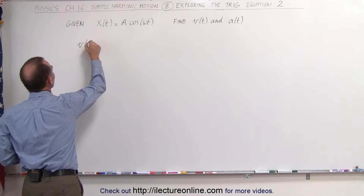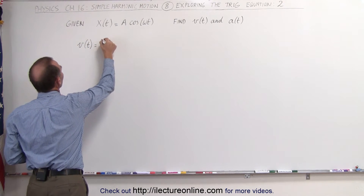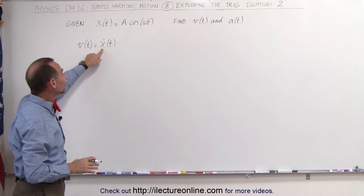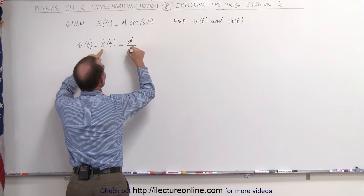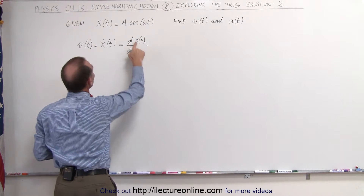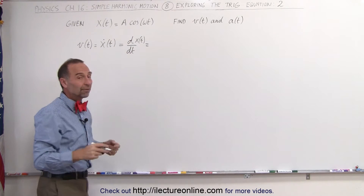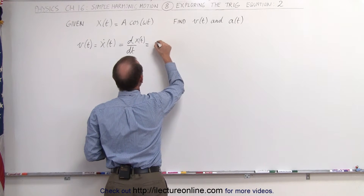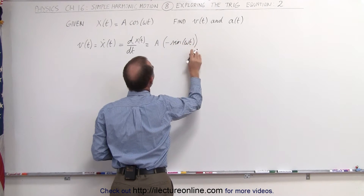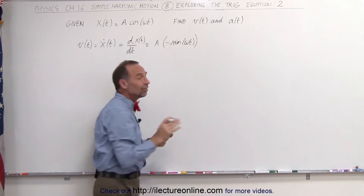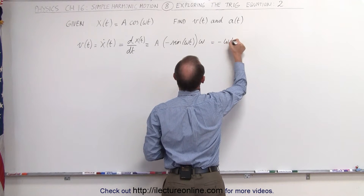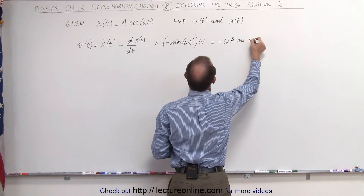Velocity as a function of time by definition is equal to x-dot as a function of time. X-dot is the derivative of position with respect to time, which means this is equal to d/dt of the position as a function of time. The derivative of cosine is negative sine, so this becomes a times negative sine of omega t, times the derivative of the angle omega t. Since t is the variable and omega is a constant, we multiply by omega, giving us minus omega times a times the sine of omega t.